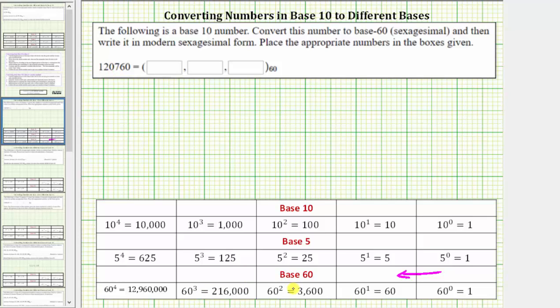So now we know in base 60, the number will have three place values. It'll have a whole number in the 60 squared place value, which is the 3,600 place value. It'll have a whole number in the 60 to the first or 60s place value, as well as the 60 raised to the zero power place value, which is the ones place value.